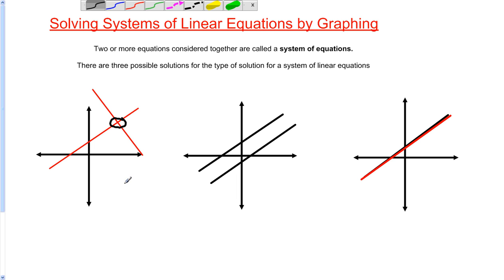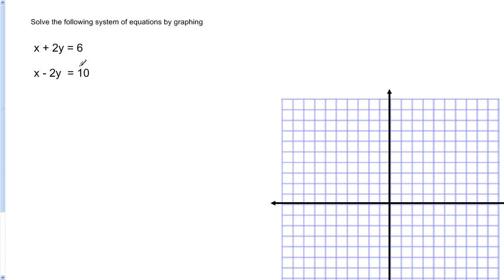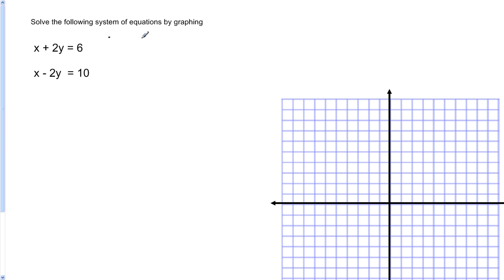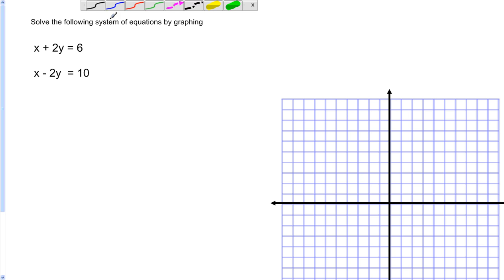So we've looked at the three possible solutions. What we're going to concern ourselves with when solving a system of equations graphically is the case where we have one solution — two lines crossing. Let's look at an example. To graph an equation, we're going to use the form y equals mx plus b. These two equations are not in that form, so we'll need to put them in it by solving both for y.